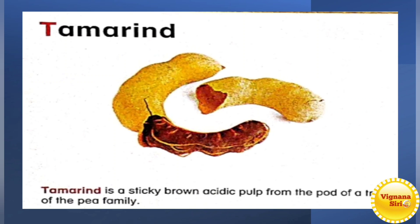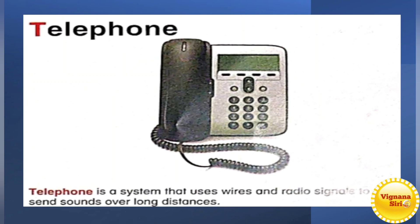T for tamarind. Tamarind is a sticky brown, acidic pulp from the pod of a tree of the pea family. In all our curries, dals, we will be using this tamarind, right? Even for pickles also — to get that sour taste.